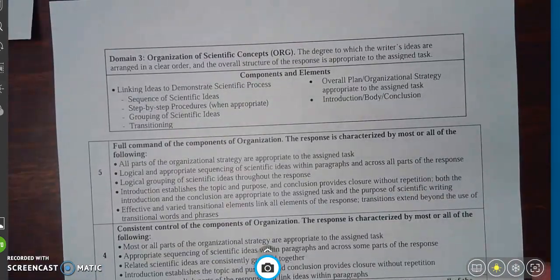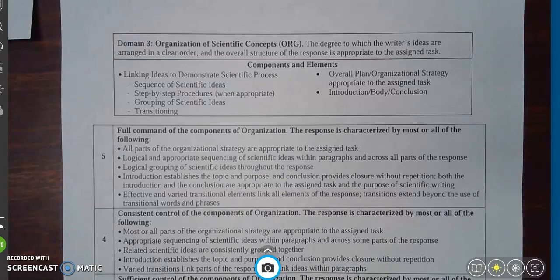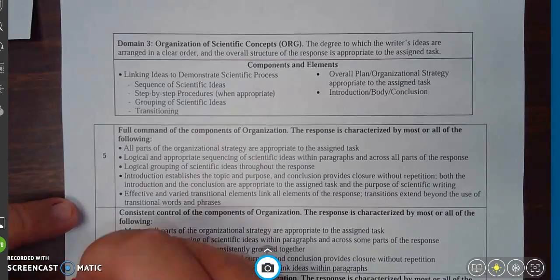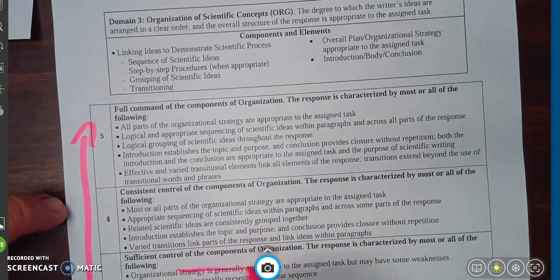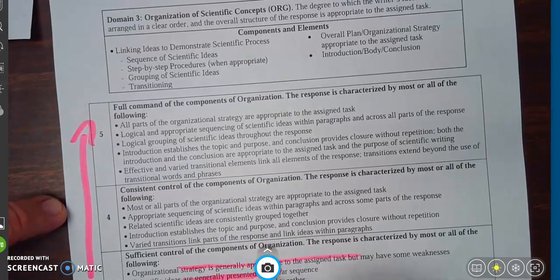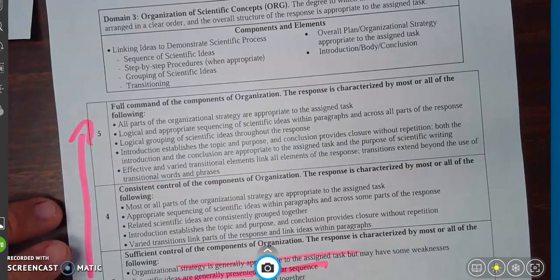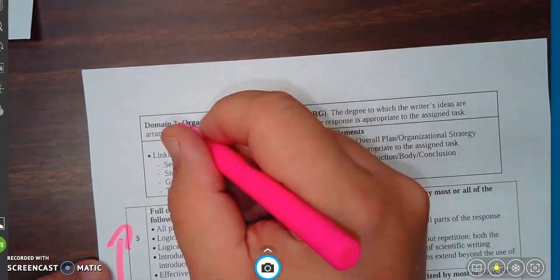Domain three, we already talked about with the social studies, the organization of scientific concepts. Again, focusing in this 3-4-5, the strategy is generally appropriate to the assigned task. Scientific ideas are generally presented in a clear sequence. So within this domain three, it's this organization of science concepts.